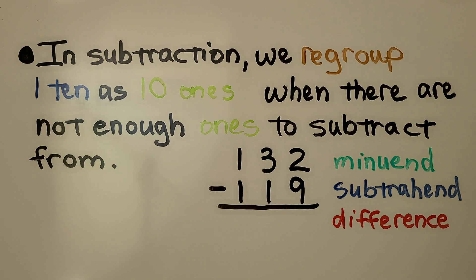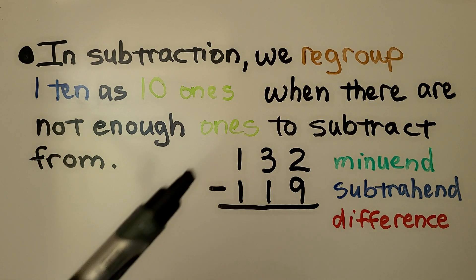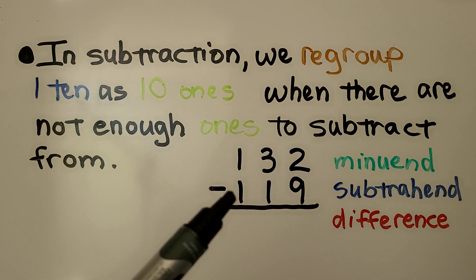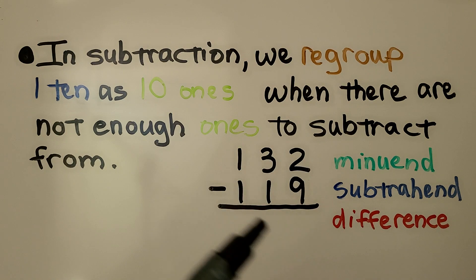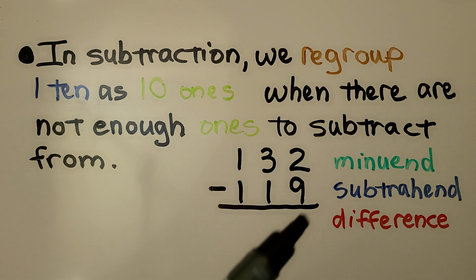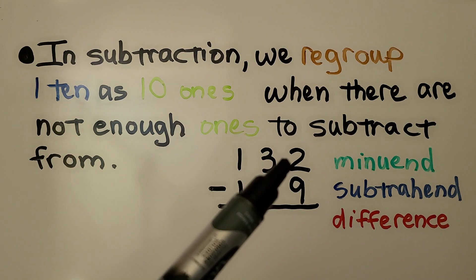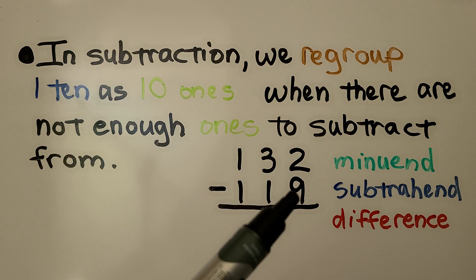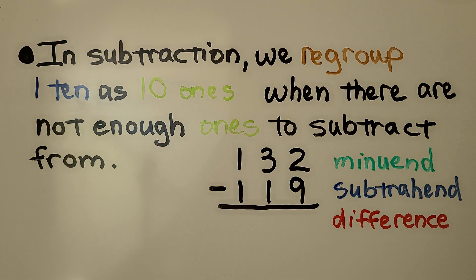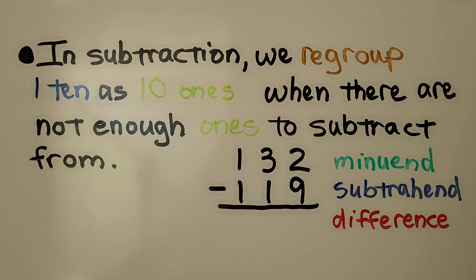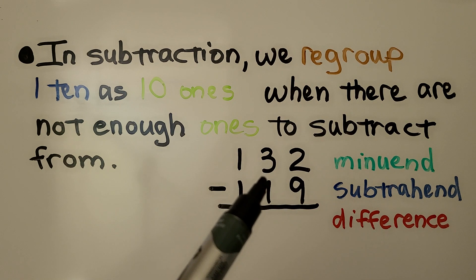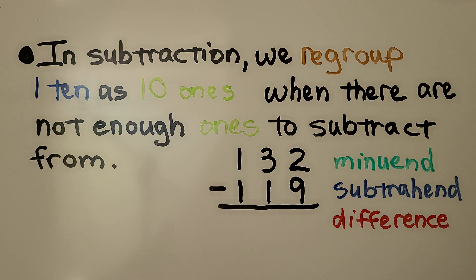In subtraction, we regroup one ten as ten ones when there are not enough ones to subtract from. Remember, this top number is the minuend. We're taking away the subtrahend, and the answer is the difference. We have two ones and we need to take nine away — we can't. We don't have enough ones, so we would regroup one of these tens as ten ones.